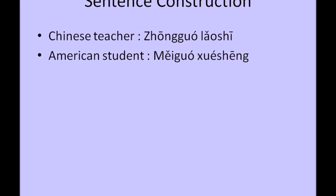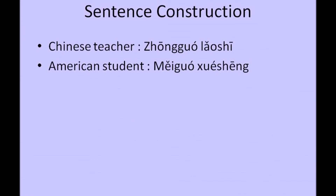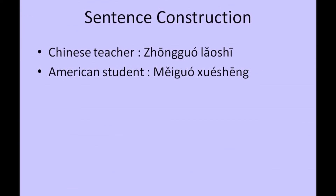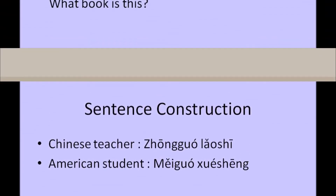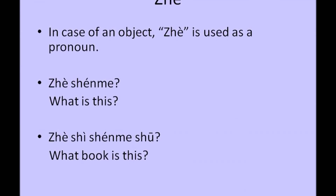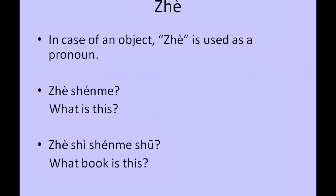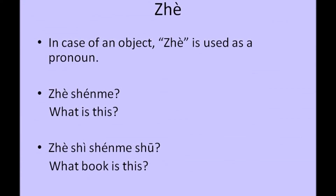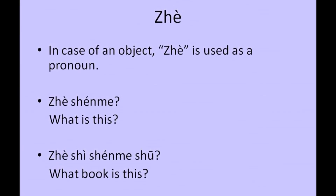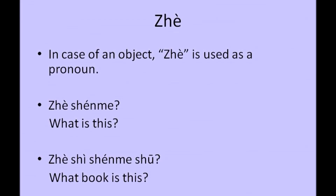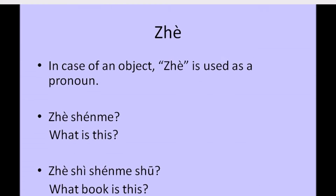Let's construct some sentences based on what we have learned so far. 中国老师, which means Chinese teacher or a teacher from China. 美国学生, which means American student. 这是什么, which means what is this? 这是什么书, which means what book is this?